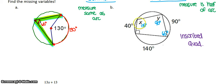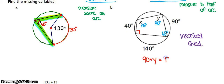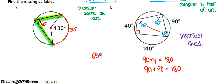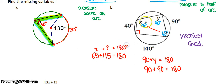Notice that opposite angles in this inscribed quadrilateral are not congruent, but they are supplementary. So 115° + 65° = 180°, and 90° + 90° = 180°. Opposite angles in an inscribed quadrilateral are always supplementary — that's an important theorem to note.